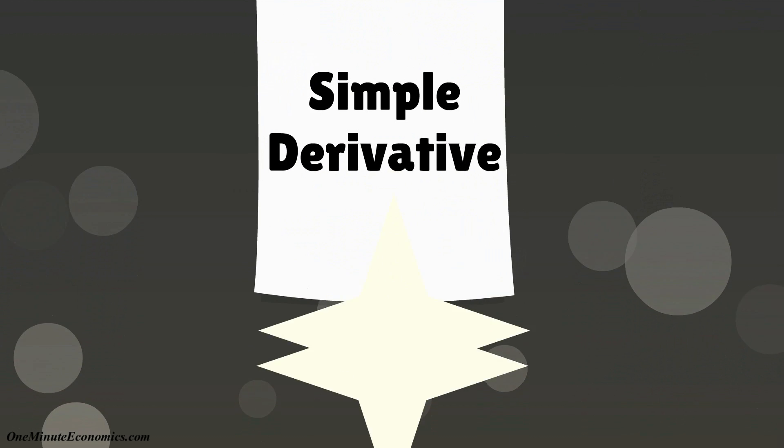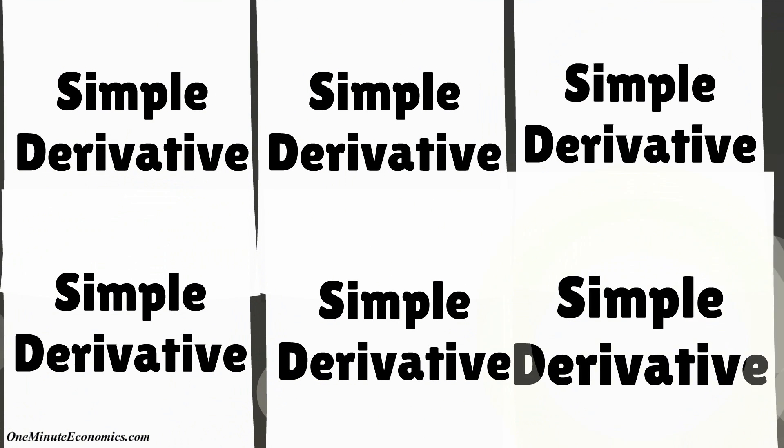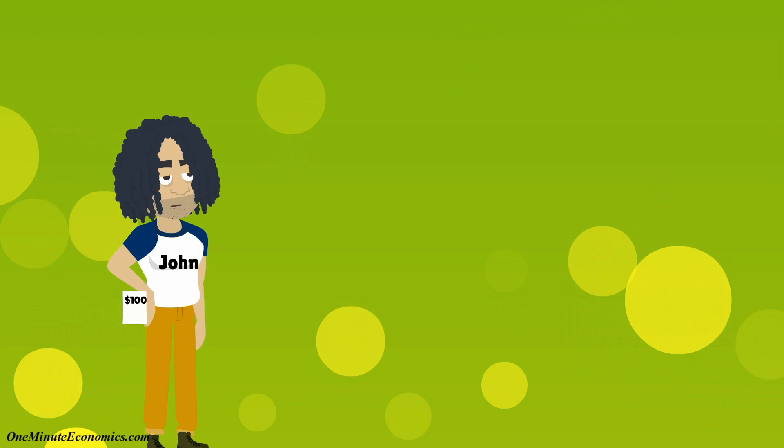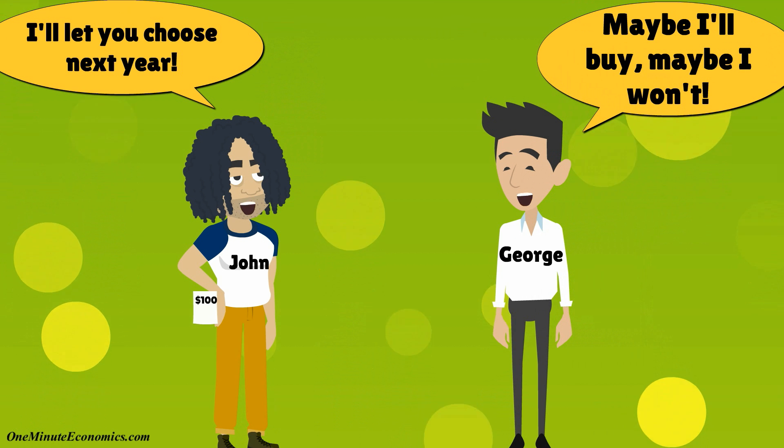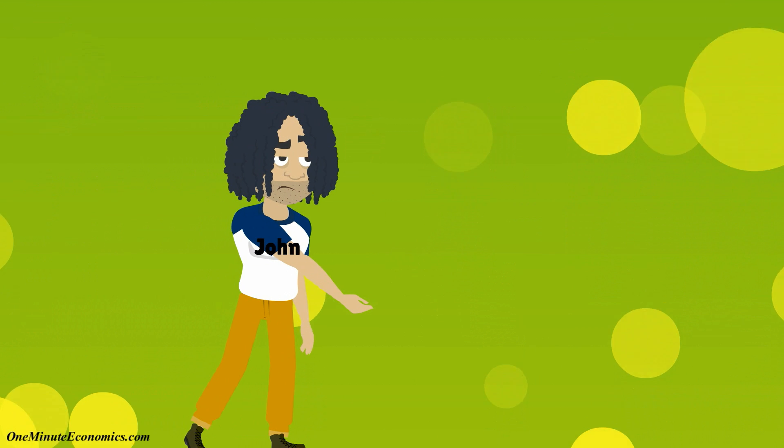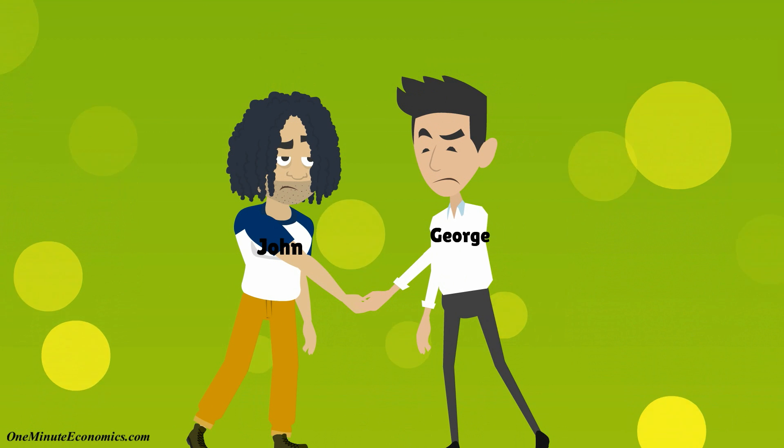This is just one example. Derivatives can be a lot more complex. George can perhaps pay John $100 for the right to choose whether or not he buys at $1 per pound next year. Maybe they'll work something else out through derivatives.